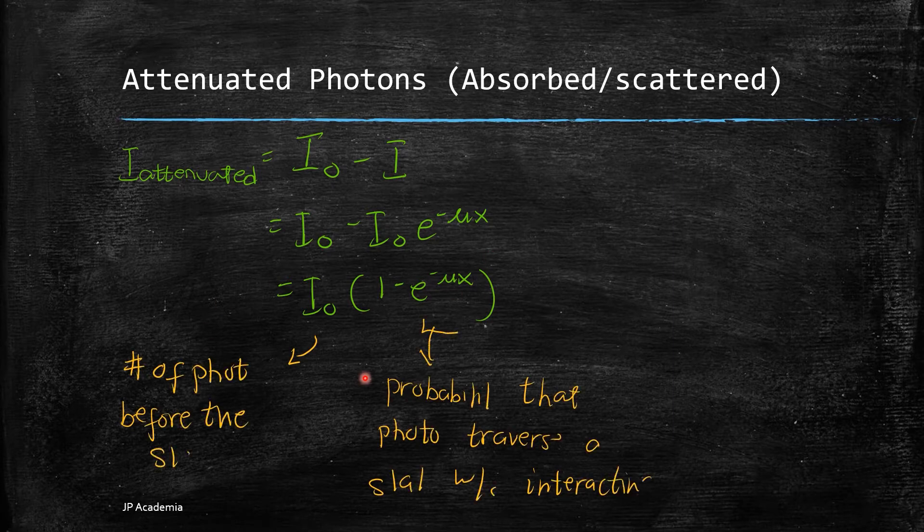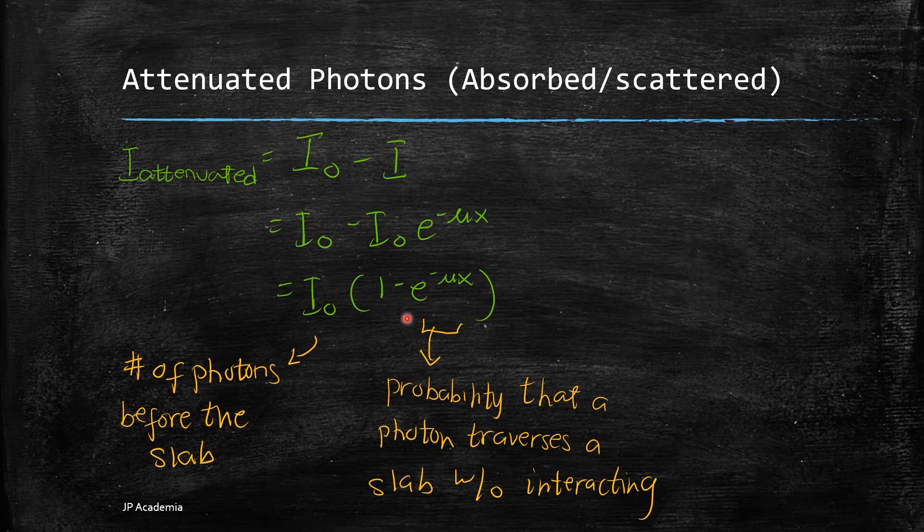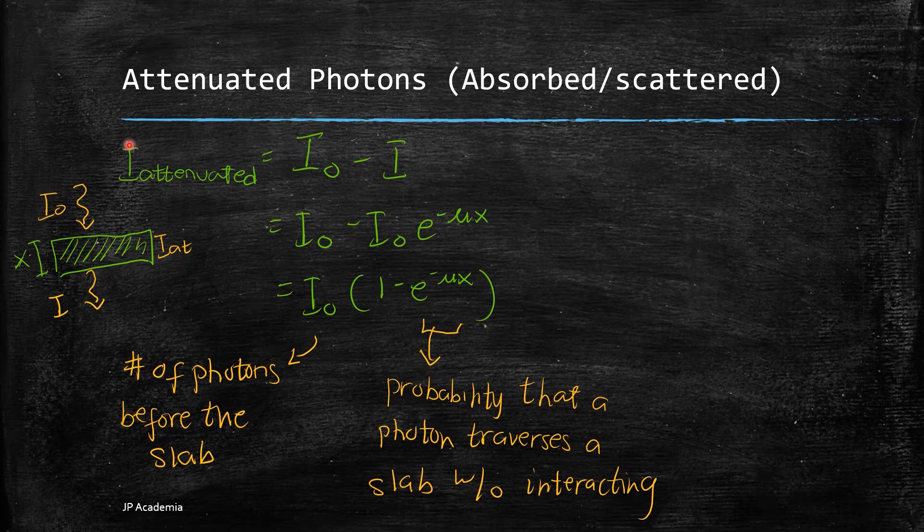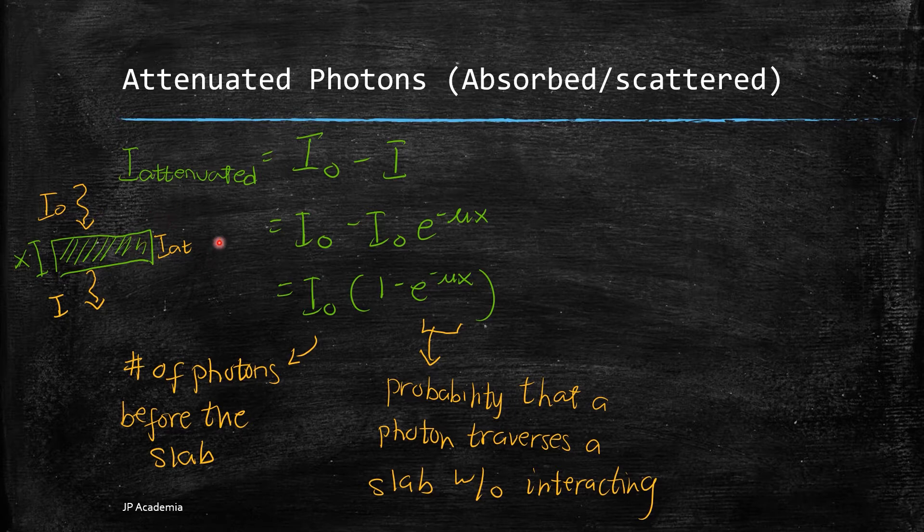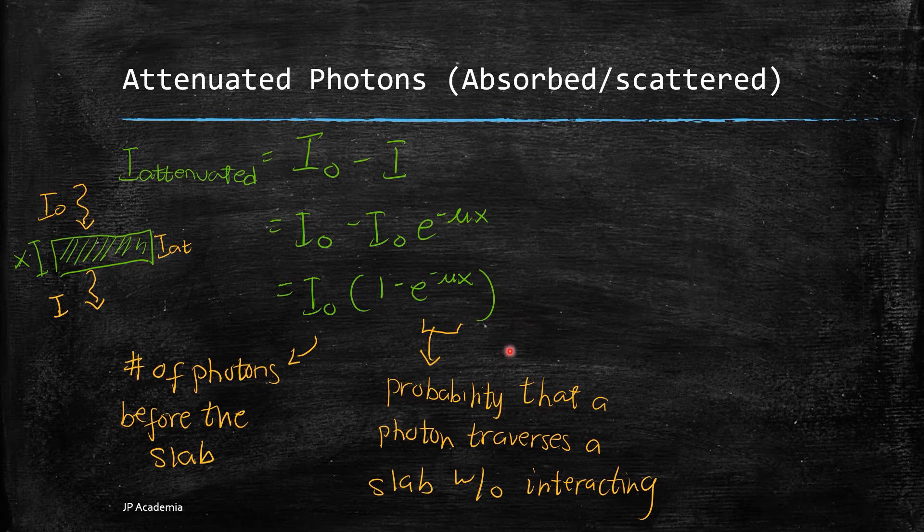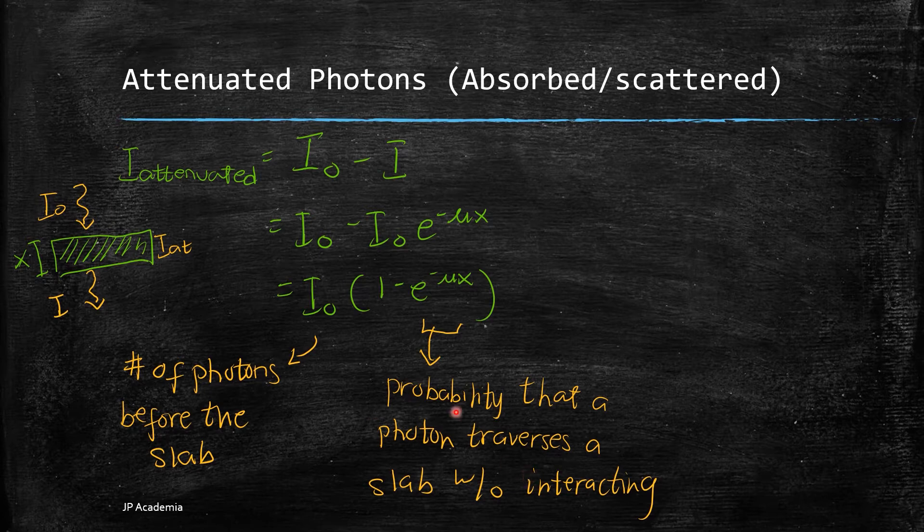So we have I0 and this exponential function. Your I0 here refers to the number of photons before the slab as shown in the drawing. So this is the slab and this is your I0. This one refers to the photons penetrating this thin slab and we have this I attenuated, which refers to this one.